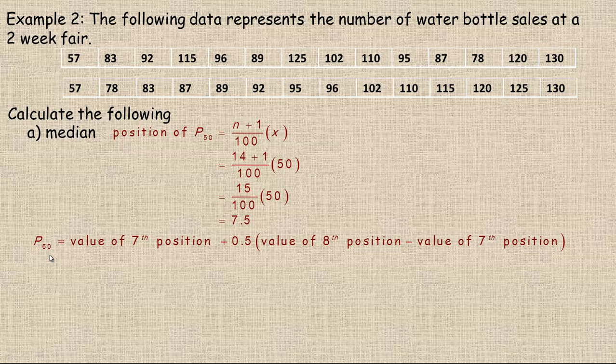So, P50, the 50th percentile, would be the value of the seventh position, which is 95, plus 0.5 times the difference between these two numbers. So, the value of the eighth one, which would be 96, minus the value of the seventh one, which is 95. Plugging in the numbers from the data set, the seventh number is 95, and then plus this 0.5 from the 7.5, times, in brackets, 96 minus 95. That's 1. 1 times 0.5 is 0.5. So, we're actually just adding 0.5 to 95, which is 95.5. So, the median is 95.5.